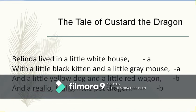Belinda — Belinda is a girl — lived in a little white house with a little black kitten and a little grey mouse, and a little yellow dog and a little red wagon, and a little pet dragon. Now let us look at the rhyme scheme: the last word of the first line is 'house' and the last word of the second line is 'mouse.'